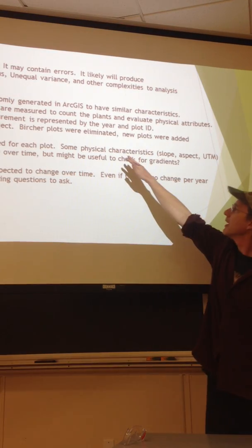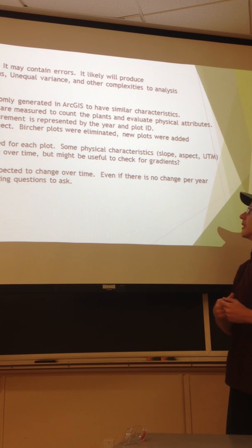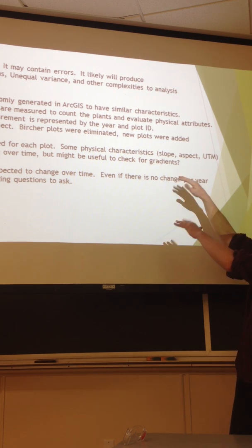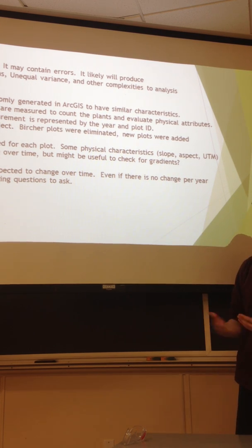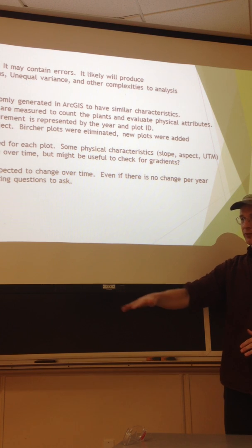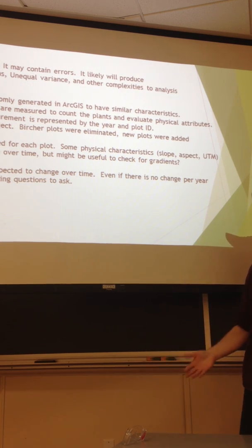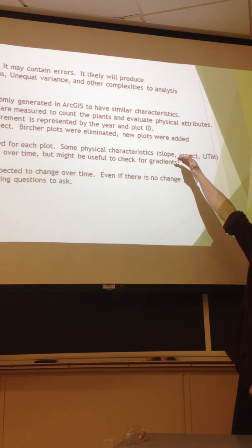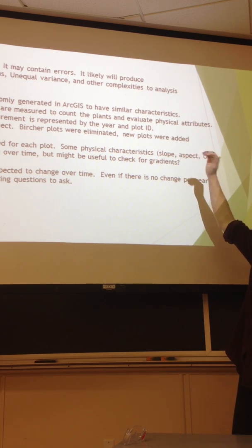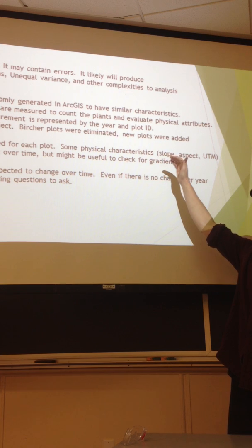So our methods, we used GIS to create these random locations that fit specific characteristics. Like is the land flat? Does it have the right community that burned? Did the burn happen within a certain time frame? So we gave it fixed parameters, but it randomly generated where the plots are located.